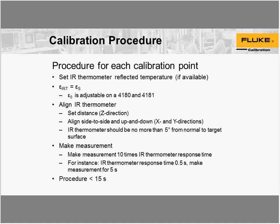To align the IR thermometer, you need to set the distance — the z-direction in Cartesian coordinates. Set the distance to your measuring distance for calibration. Then align the IR thermometer from side to side and up and down — the x and y directions. When this part of the process is done, the IR thermometer should be no more than 5 degrees from perpendicular to the target. That should be pretty easy for a laboratory to maintain.